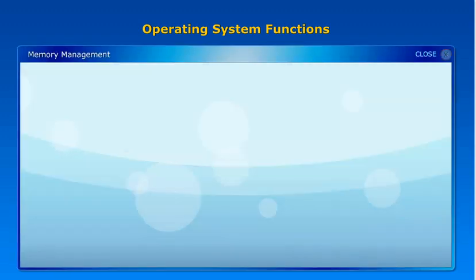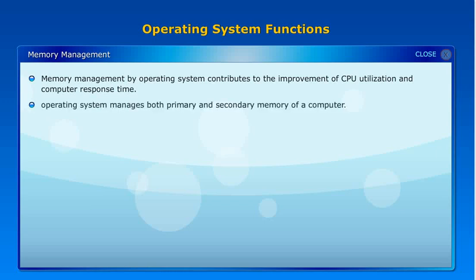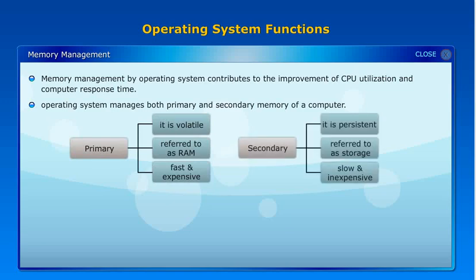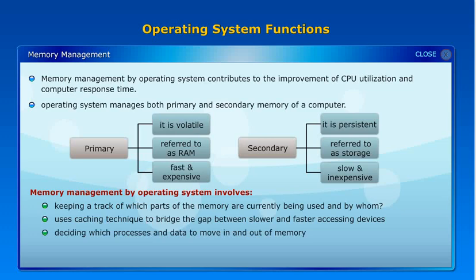Memory Management: Memory Management by the operating system contributes to the improvement of CPU utilization and computer response time. The operating system manages both primary and secondary memory. Primary memory is volatile memory referred to as RAM, which is fast and expensive. Secondary memory is persistent memory referred to as storage, which is slow and inexpensive. Memory Management involves keeping track of which parts of memory are currently being used and by whom, using caching techniques to bridge the gap between slower and faster accessing devices, deciding which processes and data to move in and out of memory, and allocating and deallocating memory space as needed. This also includes Disc Scheduling.